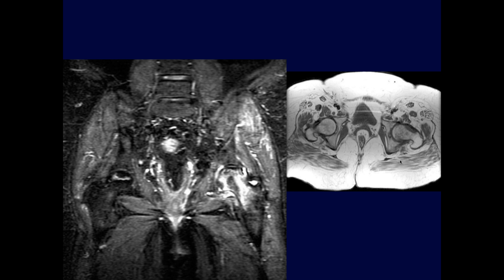Sarcopenia — severe muscle atrophy with fatty replacement — is demonstrated. All muscles appear markedly atrophic and low volume with fat infiltration throughout. In severe sarcopenia, muscles become friable and weak, so normal minor activity can produce muscle tears, pain, and inability to control bones properly, leading to increased fall risk and bone injury risk, often compounded by osteopenia.